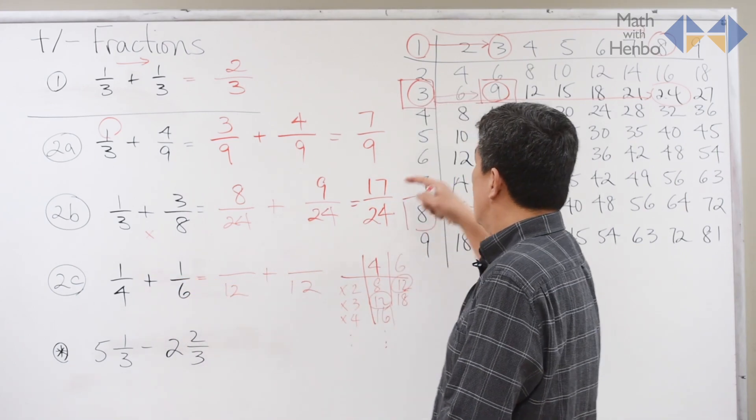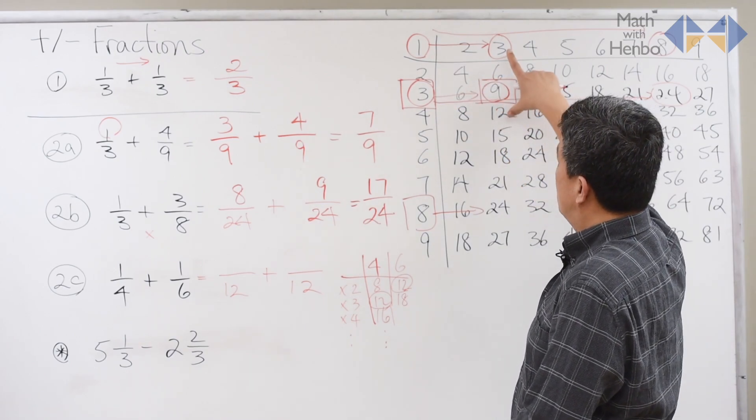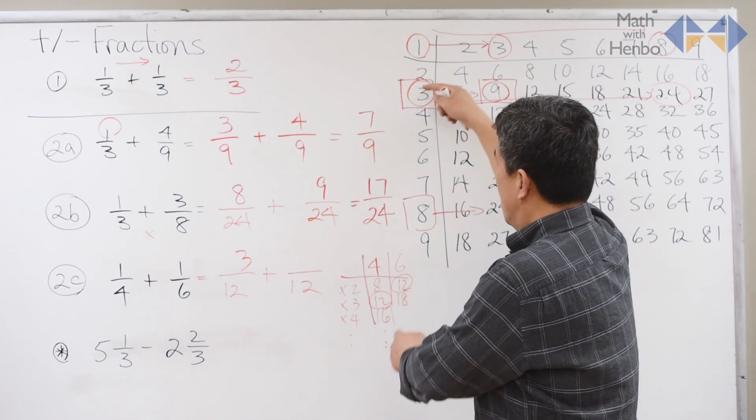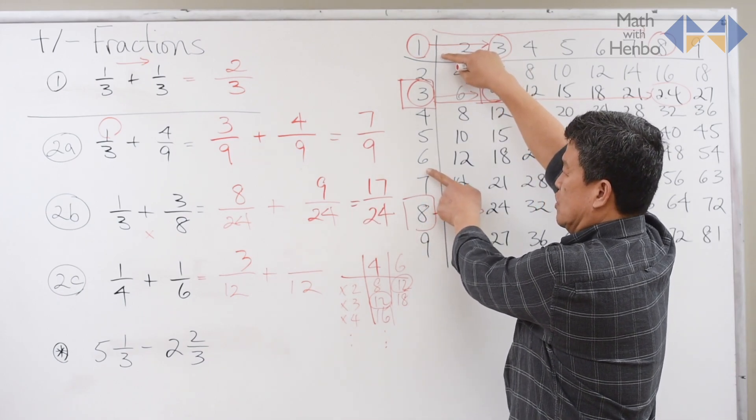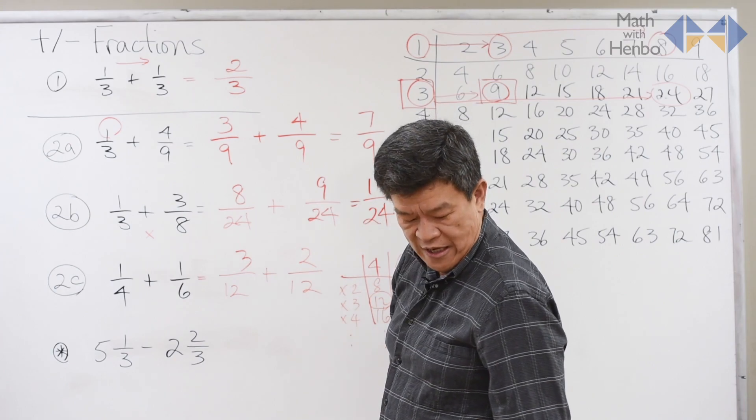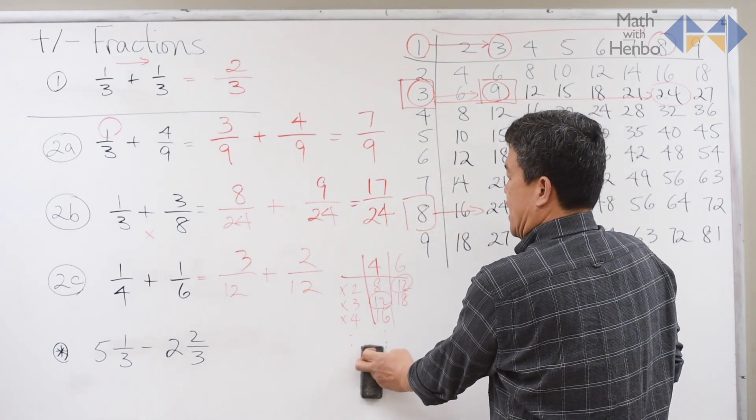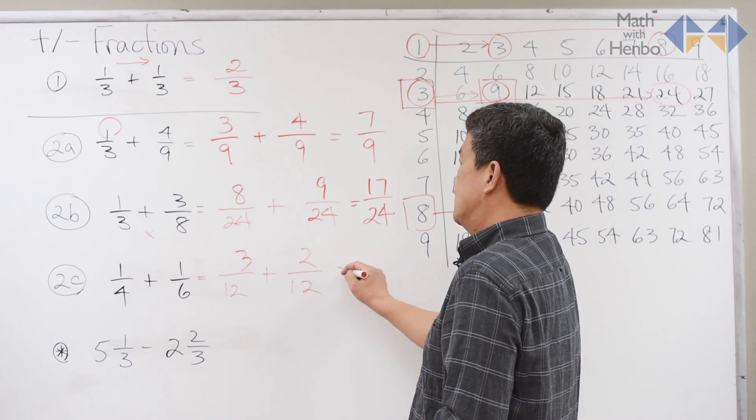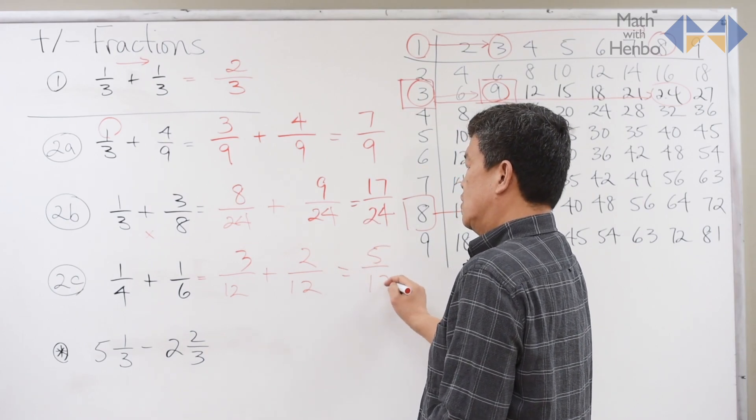Change the quarter, 1 quarter into the 12th, which becomes 3 over 12. 1 and 6 into 12th, which is 2 over 12. Once you have this, then simply follow rule number 1 again, which gives us 5 over 12.